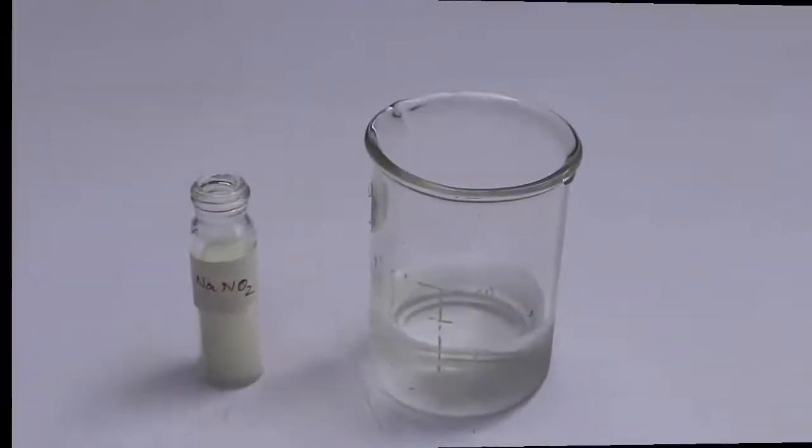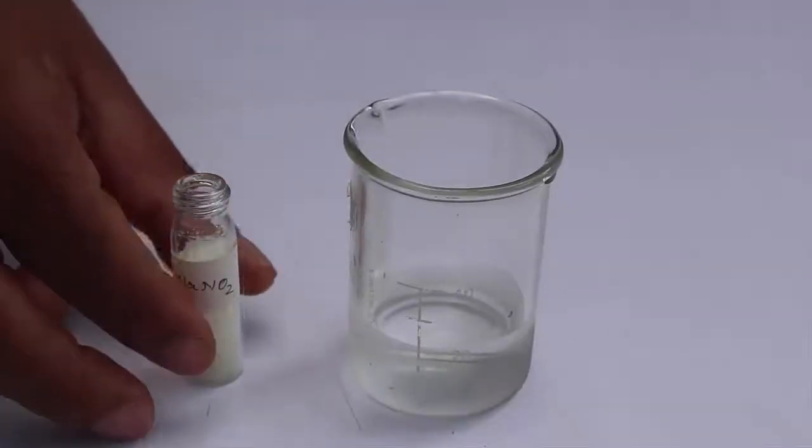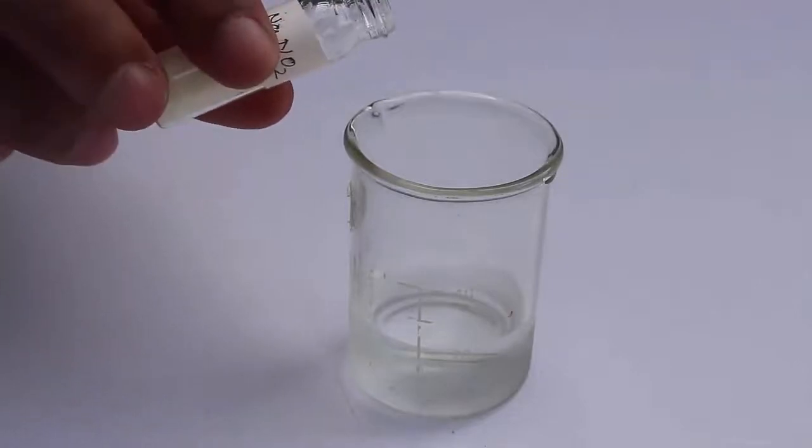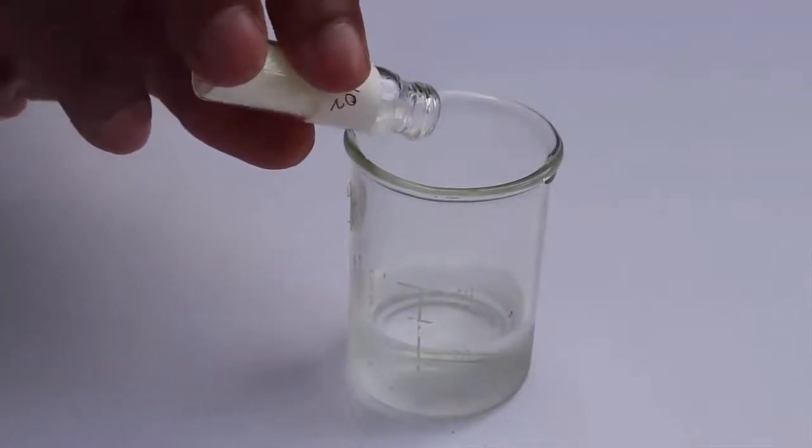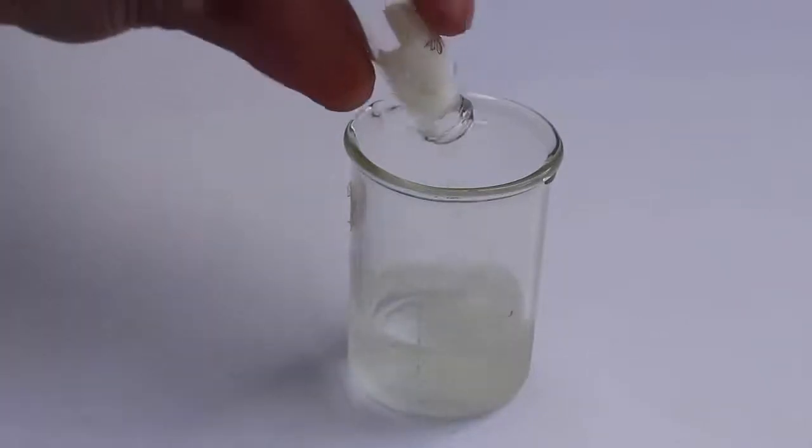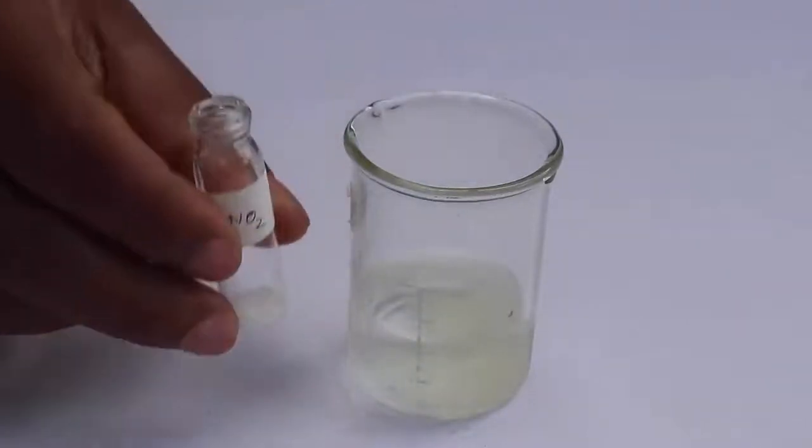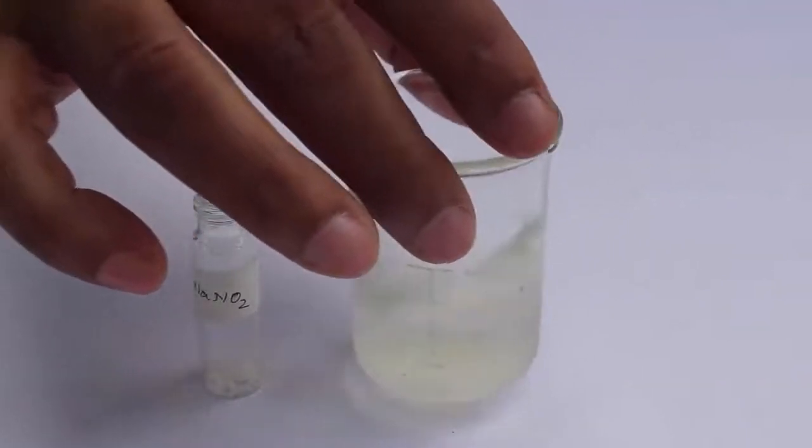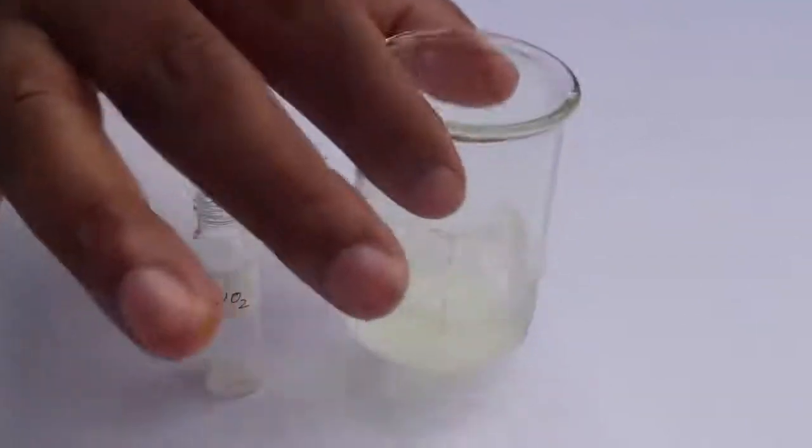Now for the second solution, add a few crystals of sodium nitrate to 20 ml of water in a beaker. Now stir the solution well. This is also an exothermic reaction and the solution will become hot.